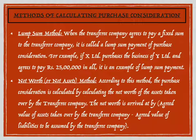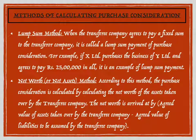The second method is the net worth or net asset method. According to this method, purchase consideration is calculated by determining the net worth of the assets taken over by the transferee company from the vendor company. The net worth is arrived at by taking the value of assets taken over minus the agreed value of liabilities assumed by the transferee company. In this method, we calculate the net worth of assets and liabilities of the old companies to determine the amount to be paid to the vendor companies.